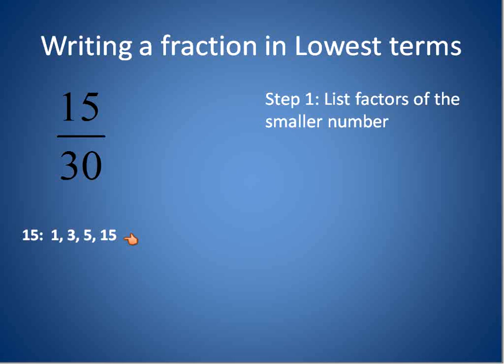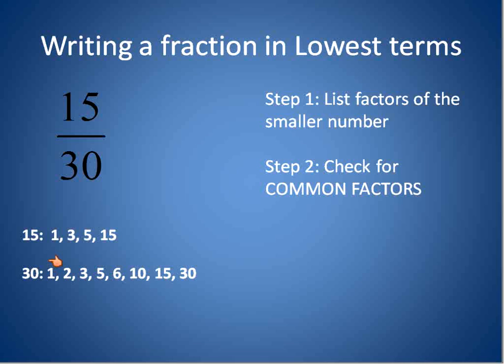The reason I start listing the factors of the smaller number is because next we're going to list the factors of the larger number and try and find all of them that are common. So here are the factors of the larger number: 1, 2, 3, 5, 6, 10, 15, 30. But the thing is, we only really need to worry about ones that are the same as the smaller one. So anything larger than 15, we really don't even need to list, because we know 30 is not going to be a factor.